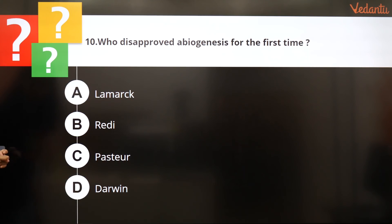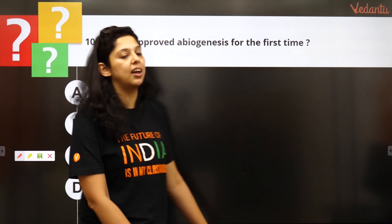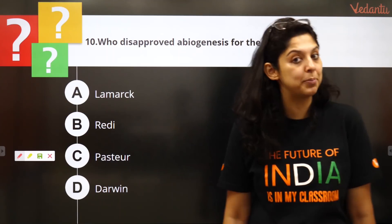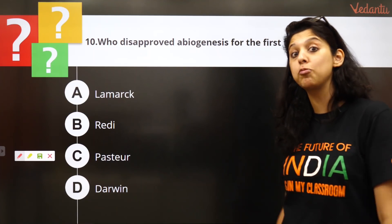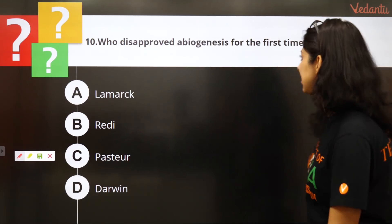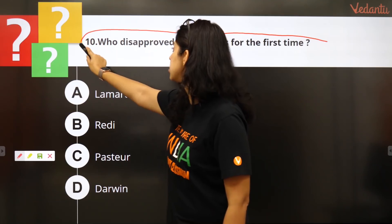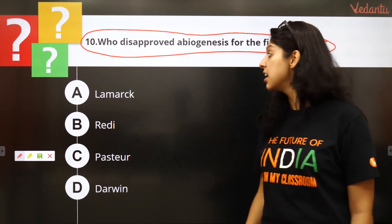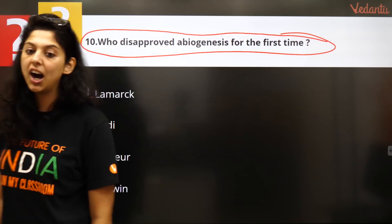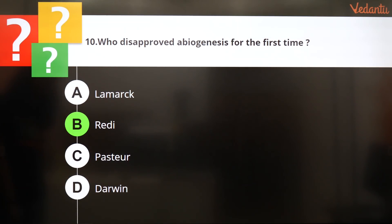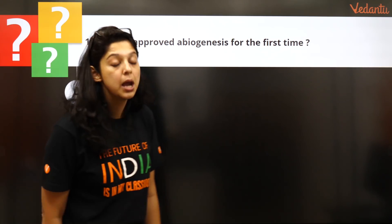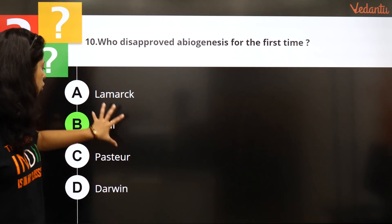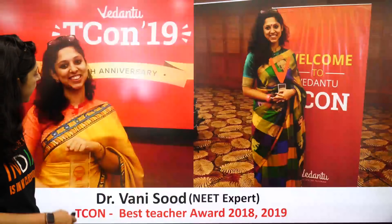Who disproved abiogenesis for the first time? Remember from the first class — so many amazing experiments were discussed. The options are Lamarck, Redi, Pasteur, or Darwin. Francisco Redi covered the meat — he was the first to disprove abiogenesis. Louis Pasteur was also involved. The answer is Francisco Redi. With that we come to the end of this marathon, super cool, super fast, extremely informative quiz session.